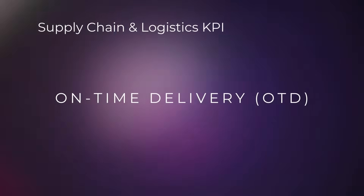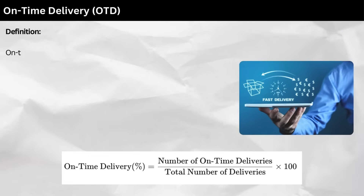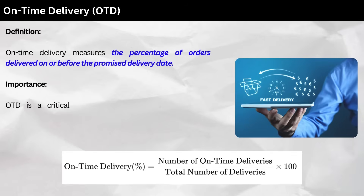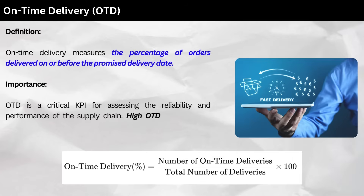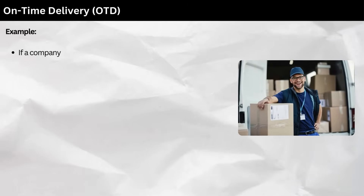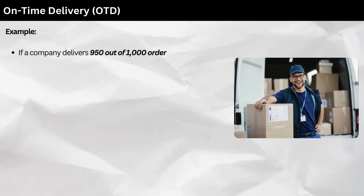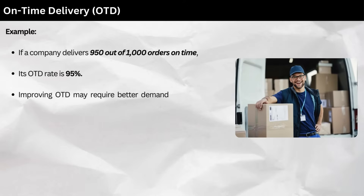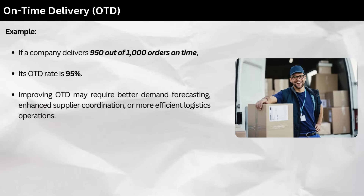3. On-time Delivery (OTD). Definition: on-time delivery measures the percentage of orders delivered on or before the promised delivery date. Importance: OTD is a critical KPI for assessing the reliability and performance of the supply chain. High OTD rates lead to increased customer satisfaction and loyalty. Calculation: as follows. Example: if a company delivers 950 out of 1,000 orders on time, its OTD rate is 95%. Improving OTD may require better demand forecasting, enhanced supplier coordination, or more efficient logistics operations.